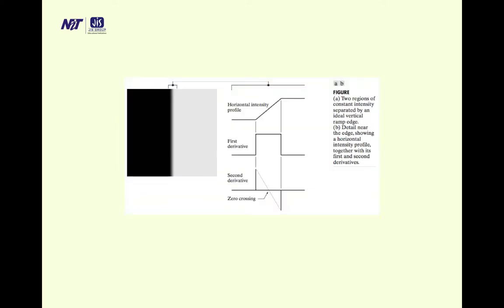Earlier we have seen a picture which consists of: on the left-hand side, a representation of a step function; in the middle, a ramp; and on the right, an intensity profile. The step function's corresponding intensity profile is a step, the middle one is a ramp, and the right side is a roof edge. This is also an example of a horizontal intensity profile showing first derivative and second derivative.